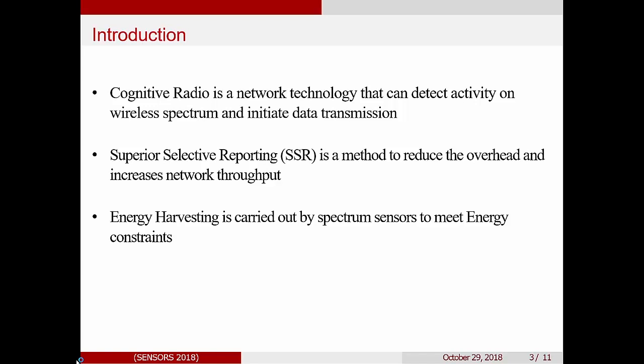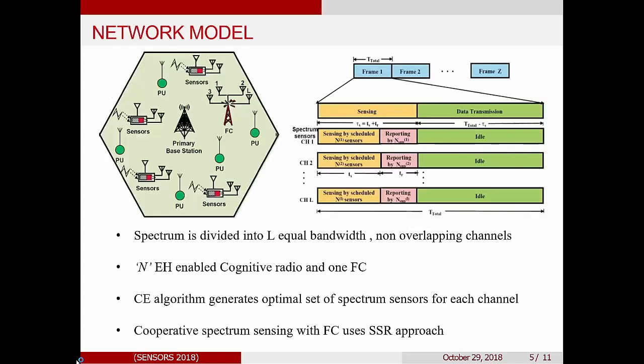In cooperative sensing, there are multiple sensors. Each of these sensors form an individual decision, and these decisions are then combined using OR rule, AND rule, or K out of M rule. In our paper, we use the SSR, which is Superior Selective Reporting approach. This is because it reduces the overhead and increases the network throughput. Our sensors are also capable of energy harvesting to meet the energy constraints.